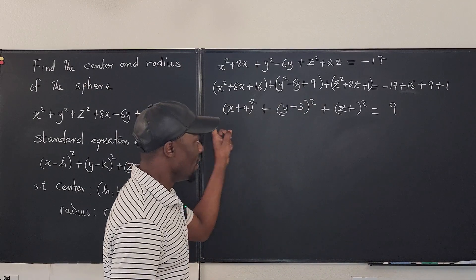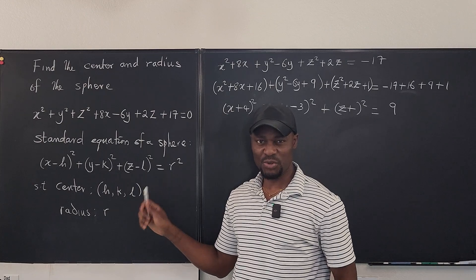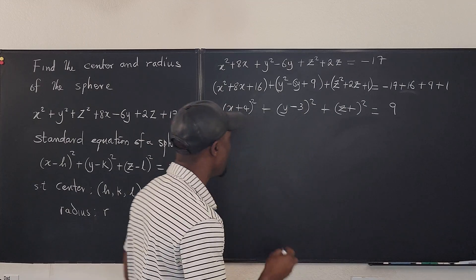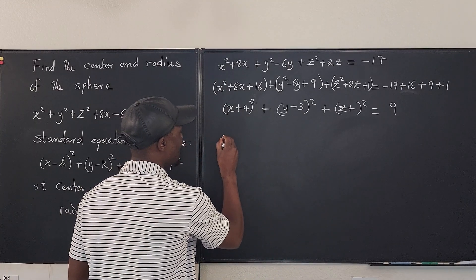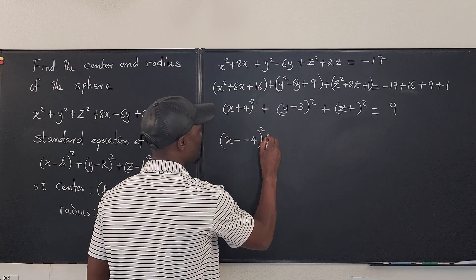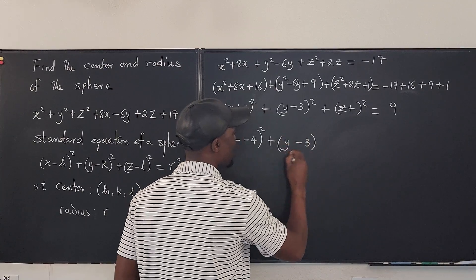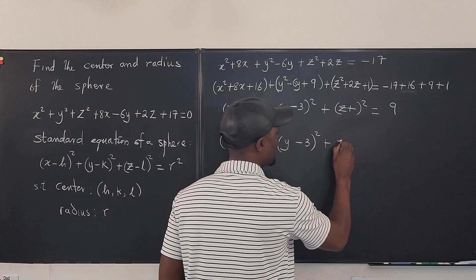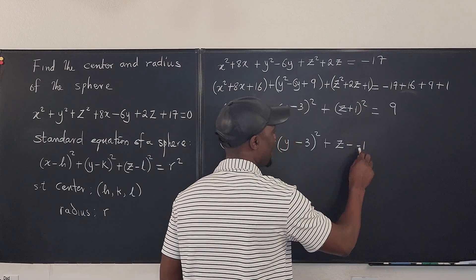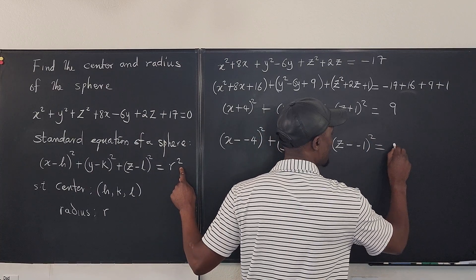So looking at this, it's very similar to this. Let's just transform it and make it look like this. So all the signs in the middle have to become a minus. Therefore, we can write this as (x - (-4))² + (y - 3)². This is already minus 3. We don't need to do anything. This is plus (z - (-1))². And this has to be written as a square. So that's 3².